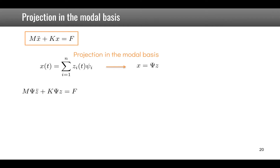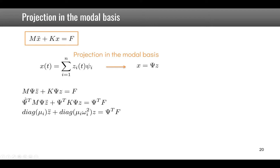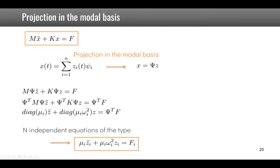Using the orthogonality conditions, Psi-transpose M Psi is a diagonal matrix with mu_i on the diagonal, and Psi-transpose K Psi is diagonal with mu_i·omega_i-squared. Because these are diagonal, the system reduces to n independent equations of the type: mu_i·z-double-dot_i plus mu_i·omega_i-squared·z_i equals f_i.